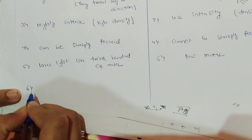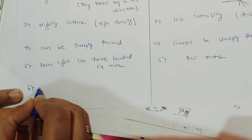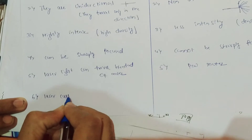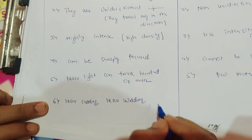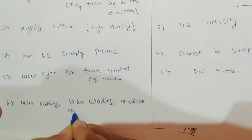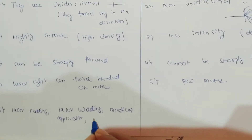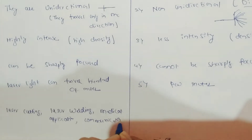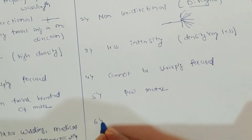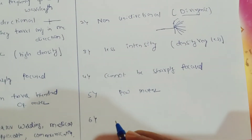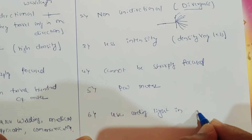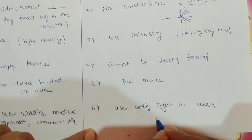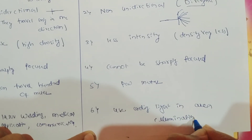The sixth important property is in the form of applications. Laser light can be used for laser cutting, laser welding, medical applications, and communication purposes — laser has many applications. In the case of ordinary light, one of the important applications is that we can use it for illuminating an area.